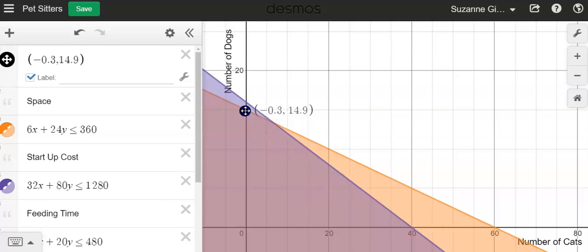The same with dogs here. So if I'm at 15 dogs, that is on the line for the space. So you're using all your space for 15 dogs and you do have enough money to do that. So again, the solution is the double shaded region.